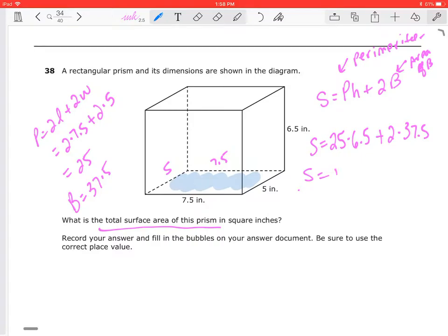So let's see. S is going to be equal to 25 times 6.5, which is going to be 162.5 plus 2 times 37.5, which is going to give us 75. So 162.5 plus 75, which will give us S, the surface area, is 237.5 inches squared.